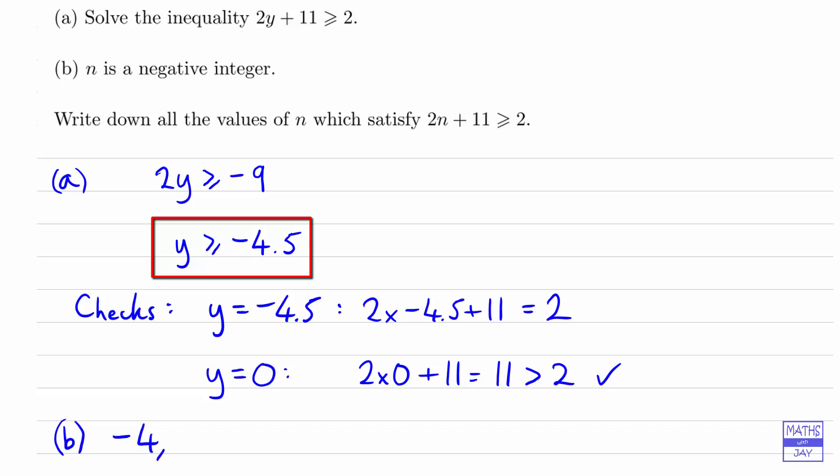So that's the first value that n could be. We just need to write down all the other numbers bigger than negative 4, and that will be negative 3, negative 2, and negative 1, because remember we're only writing down the integers, we're only writing down the whole numbers.